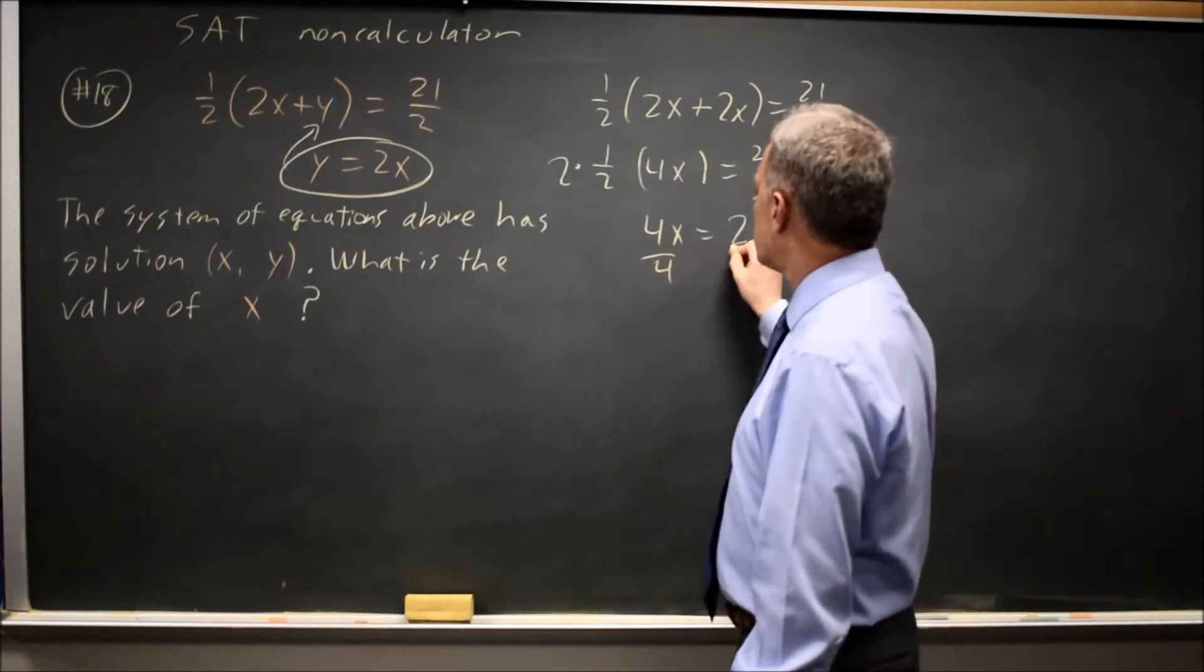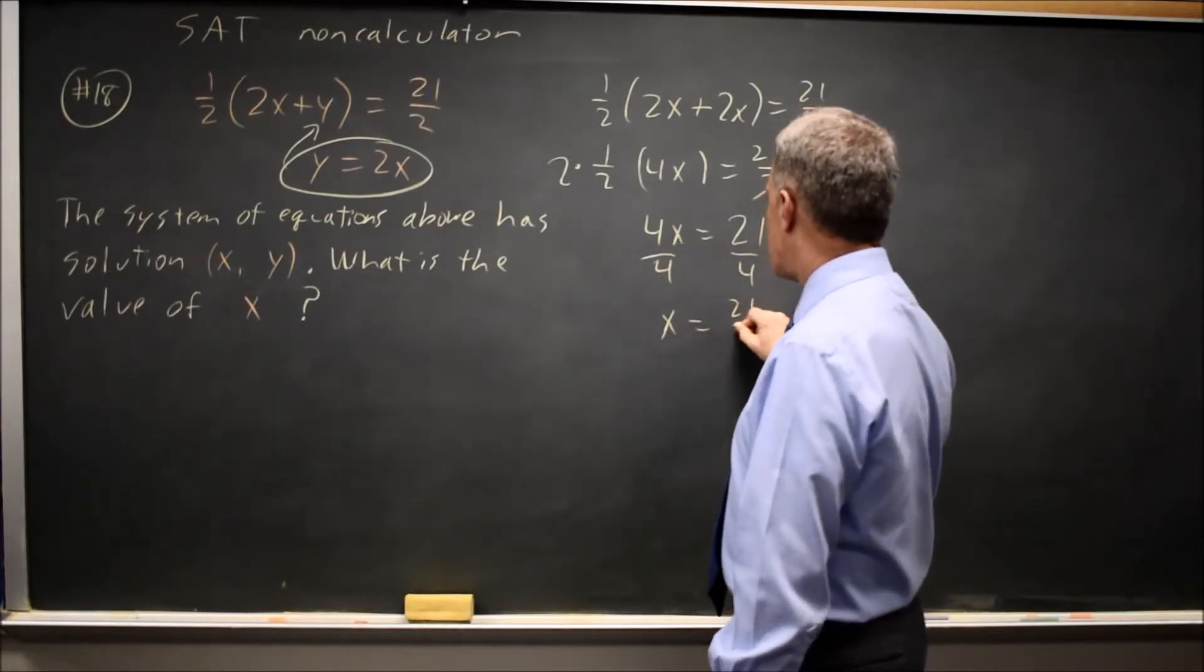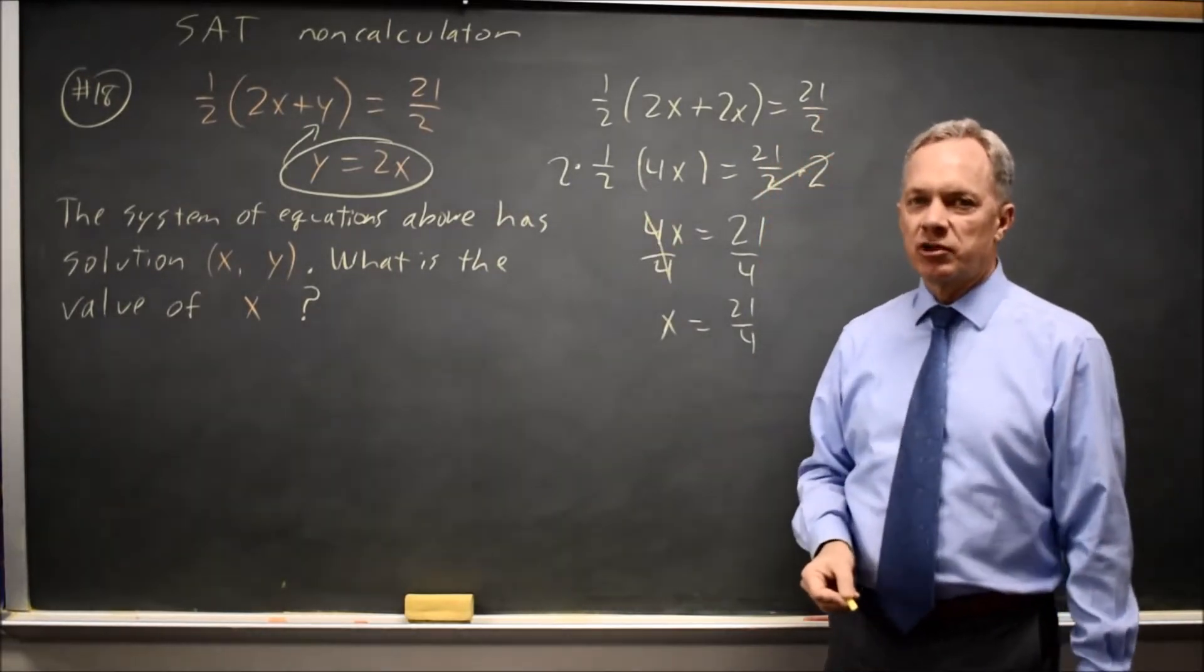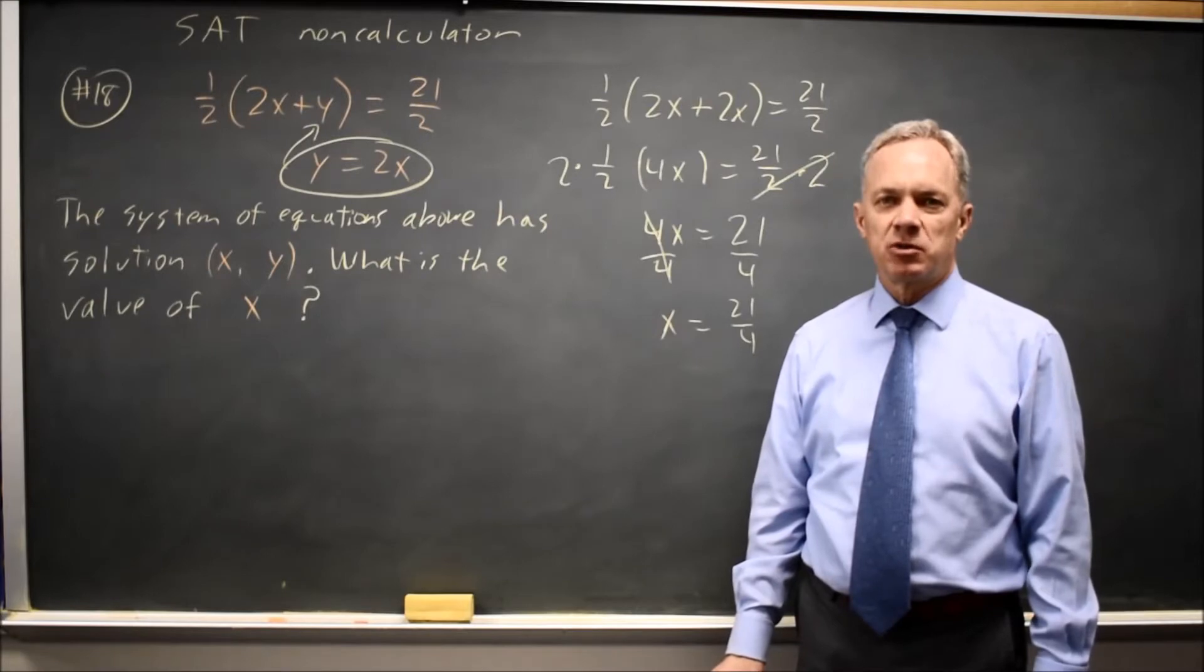Now I divide by 4 to get x equals 21 over 4, which would be the answer. I divide by 4 because 4 over 4 equals 1. Always do the same thing to both sides of the equation.